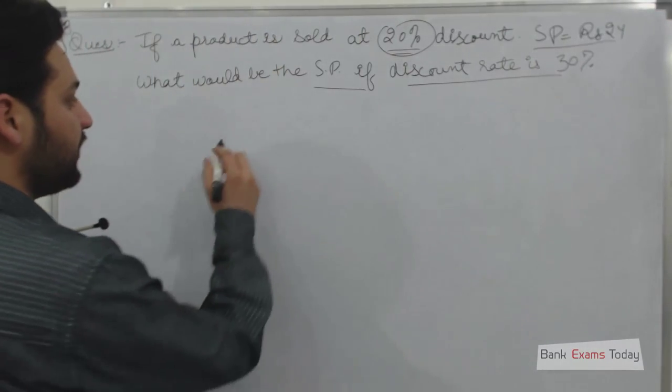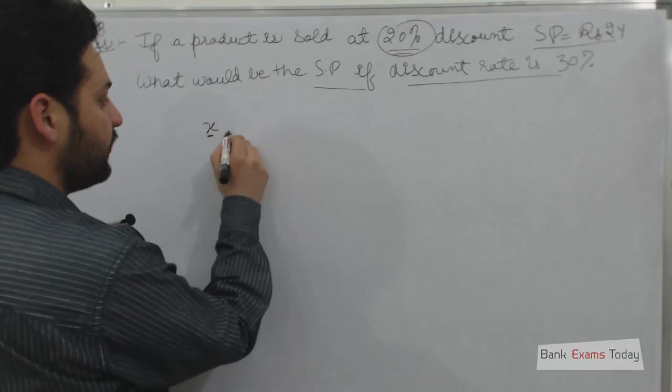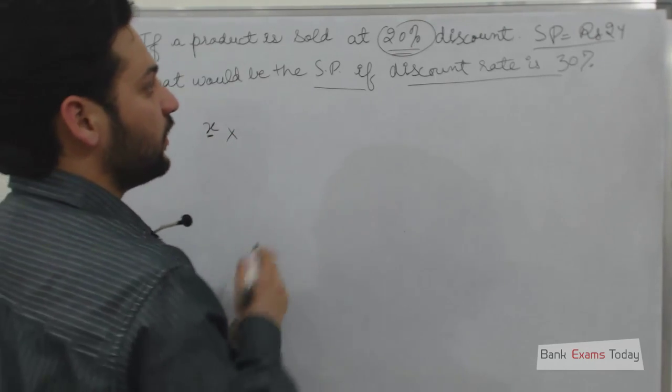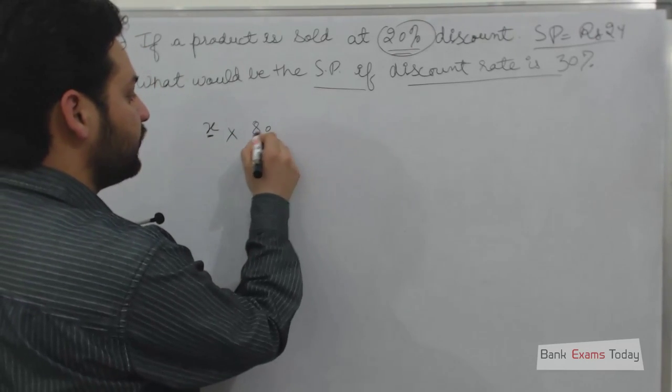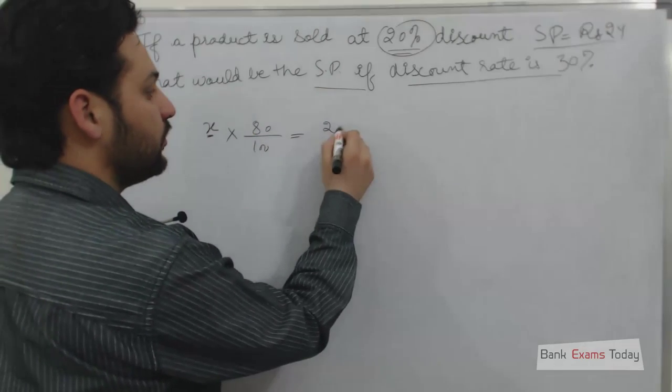If the selling price is 24, that means that we assume that mark price or list price is X, and discount is 20%, so selling price will be 80% of mark price or list price, it is 24.